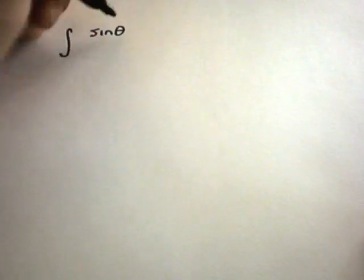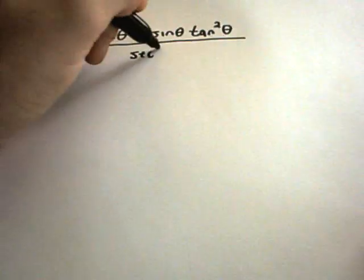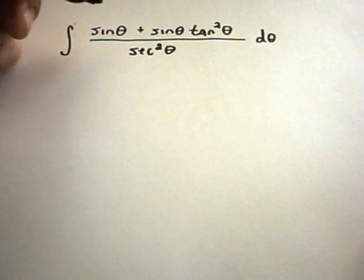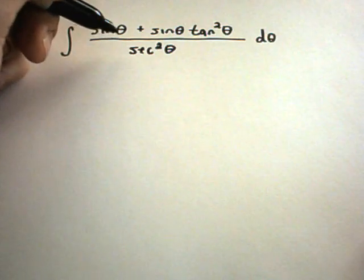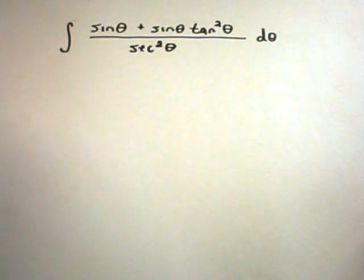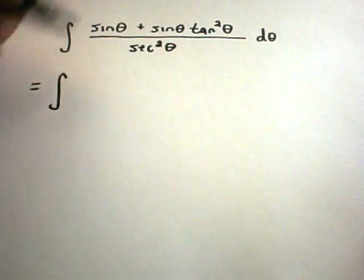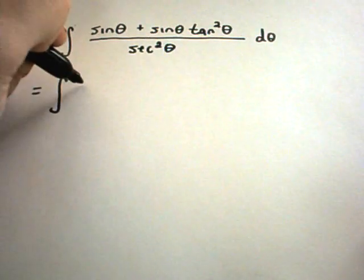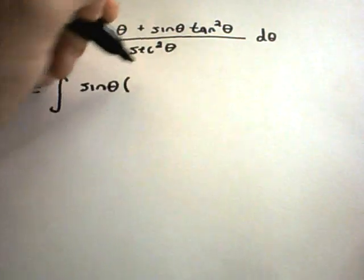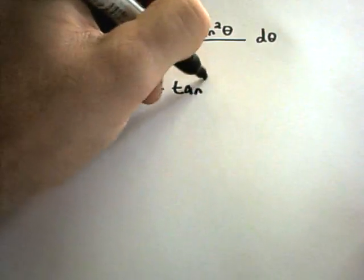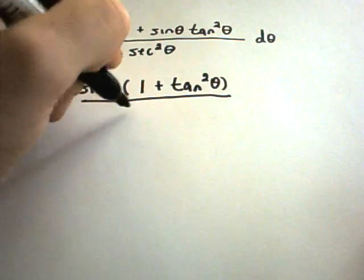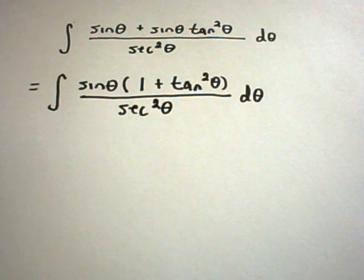Suppose we have sine of theta plus sine of theta times tangent squared theta, all divided by secant squared theta. You can factor out sine of theta from the numerator to get sine of theta times (1 plus tangent squared theta), all divided by secant squared theta. The trick to doing many problems involving trig is simply knowing your trig identities.